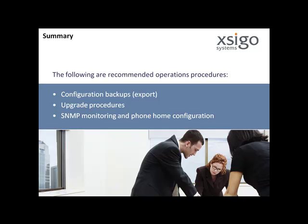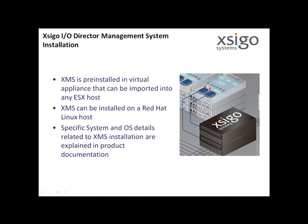The following are recommended operations procedures. Configuration backup: once configured, each SEGO IO Director has unique configuration data, and this information should be backed up on a regular basis. Refer to product documentation or online training for details of the backup procedures. Upgrade procedures: refer to product documentation or online training for details. Upgrades can be initiated using the command line interface or the SEGO Management System GUI. SNMP monitoring and phone home configuration: configure network monitoring software and the SEGO IO Director phone home capability to monitor the health and performance of the SEGO IO Director.